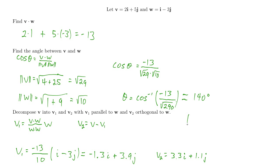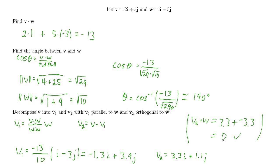Just for fun, let's verify that v2 really is orthogonal to w by computing v2 dot w — we should get zero. v2 dot w is 3.3 times 1, which is 3.3, plus 1.1 times negative 3, which is negative 3.3. Adding those up gives exactly zero. So v2 really is orthogonal to w — a quick check to make sure we didn't make any mistakes.